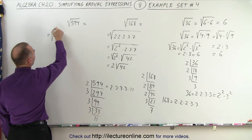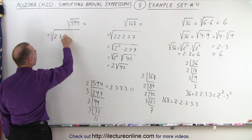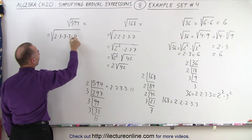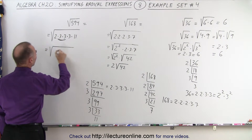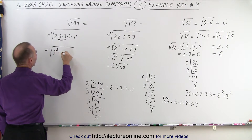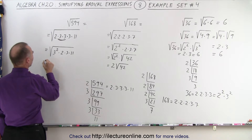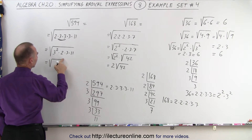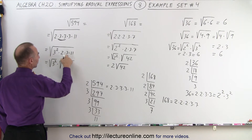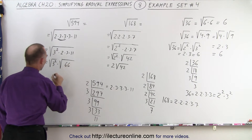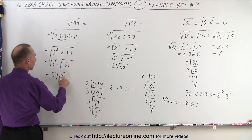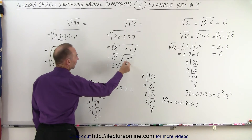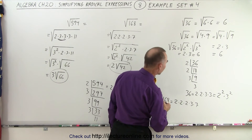So the square root of 594 equals the square root of 2 times 3 times 3 times 3 times 3 times 11. Notice there are two pairs of 3's, so this can be written as the square root of 3 squared times the square root of 2 times 3 times 11. Since 2 times 3 times 11 equals 66, this simplifies to 3 times the square root of 66.